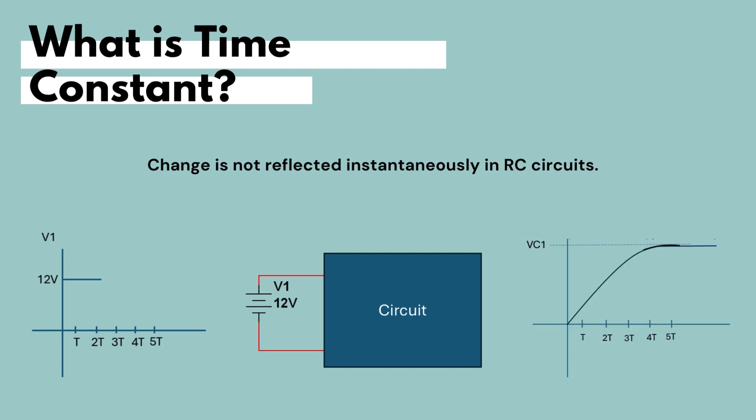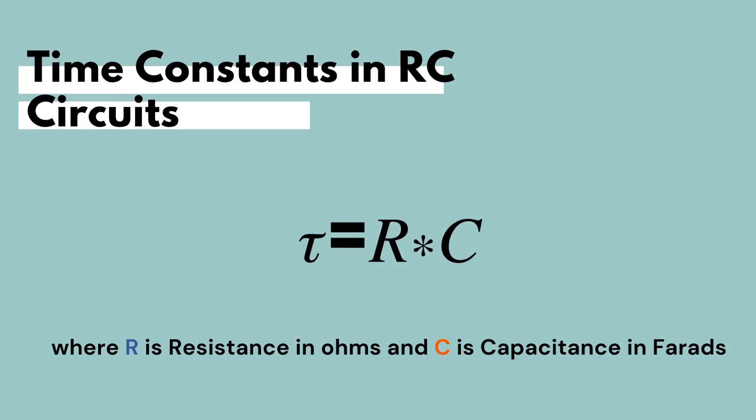But capacitors, unlike resistors, cannot react instantly to quick or step changes in the applied voltage. So there will always be this short time where, or a transient response, where there is time between the time for the capacitor to reflect that change in input. And as you can see from this equation, tau, which is the Greek letter denoting time constants in electric and electronic circuits, is equal to the resistance times capacitance.